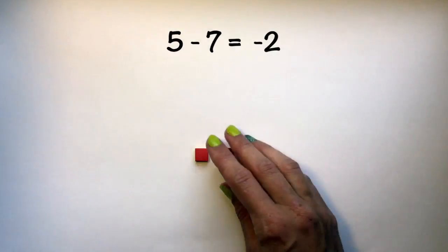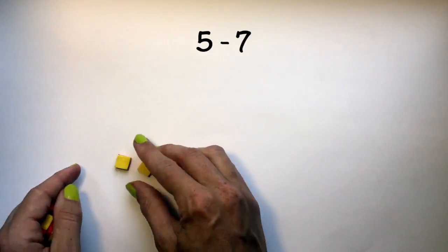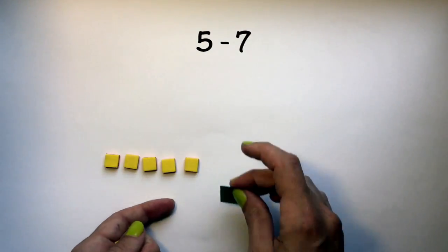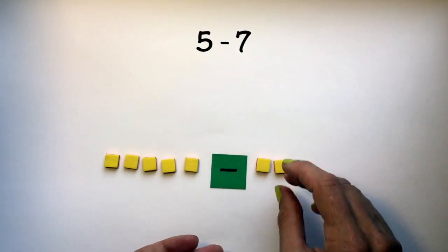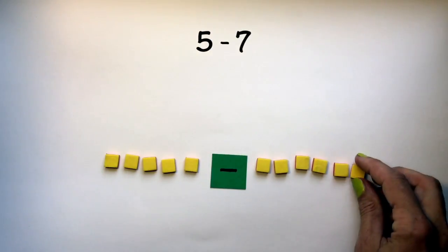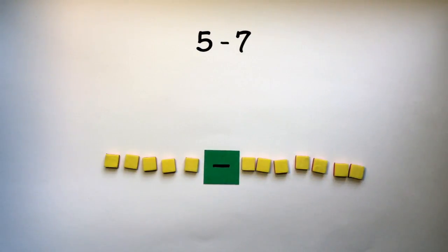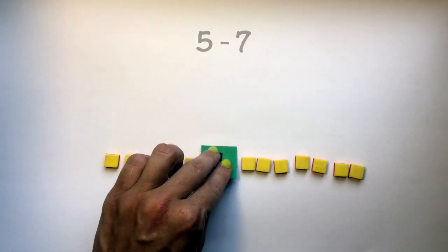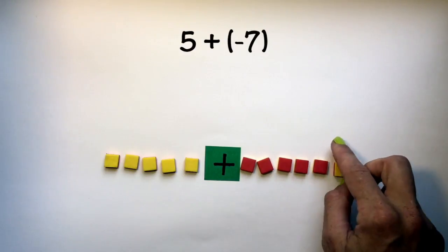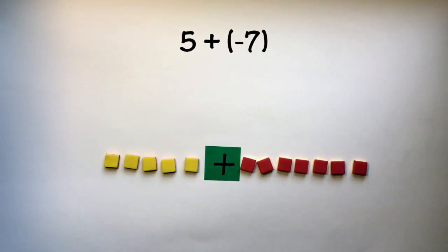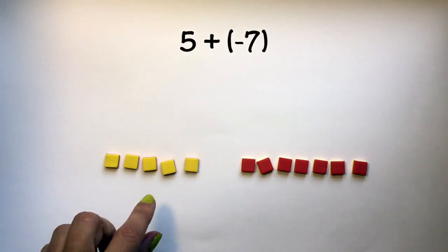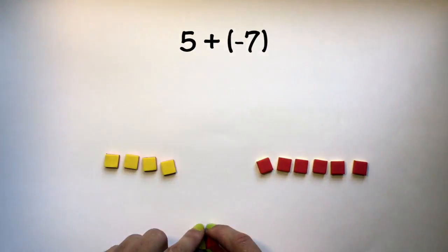Let's use the add the opposite method. We have 5 minus 7. I can change this to be adding the opposite, changing all of my positive integers to negative integers. Now I have 5 plus negative 7. I can remove this sign now that it's addition and create zero pairs.